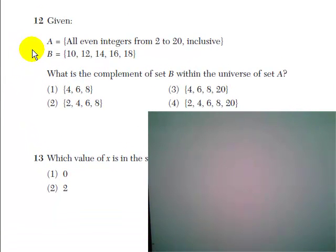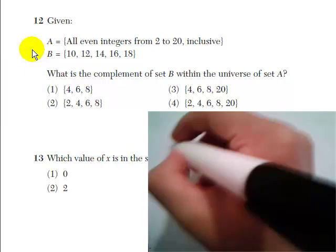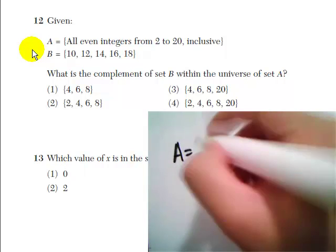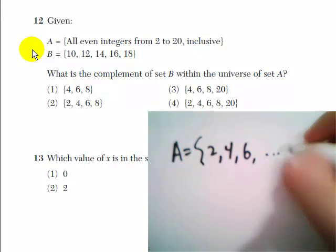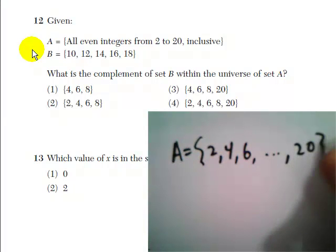Number 12 gives us two sets. We get set A, which is the set of all even integers from 2 to 20, so A is the numbers 2, 4, 6, all the way up to 20. It does say inclusive.